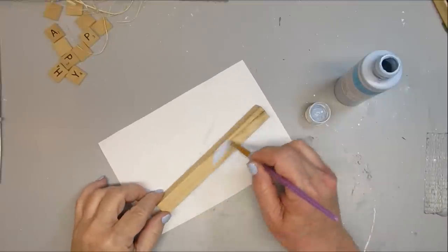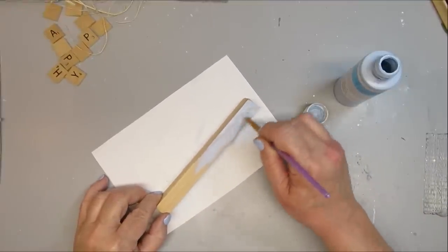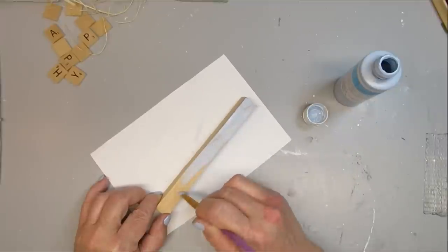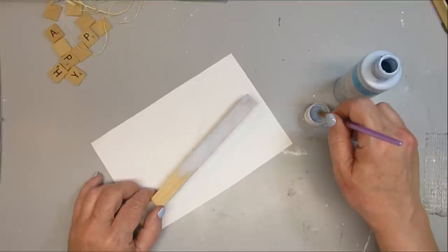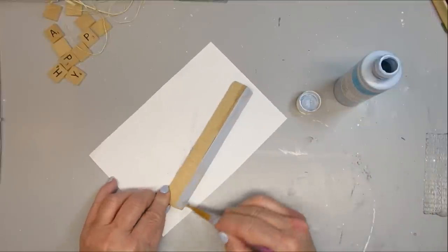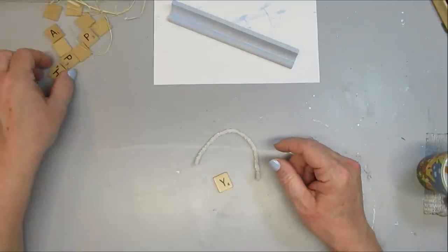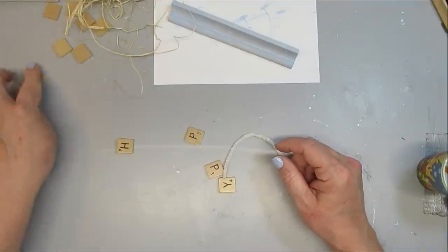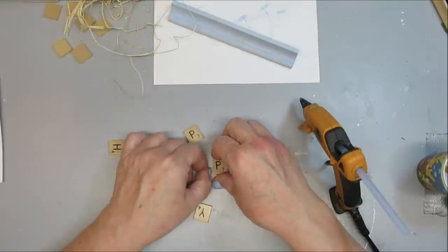For this project, I'm starting off by painting this letter holder. It came from a Scrabble game that I found at the thrift store. I'm also going to be using the letter tiles to spell out Happy Easter. I started giving this a really light coat of this blue color.